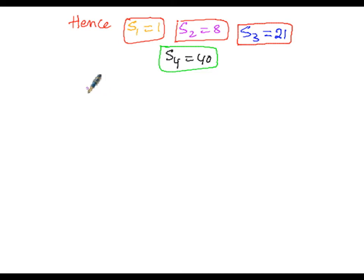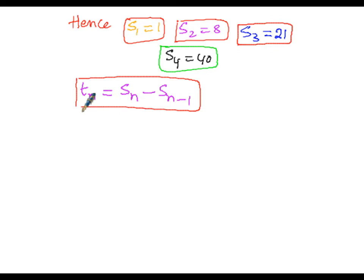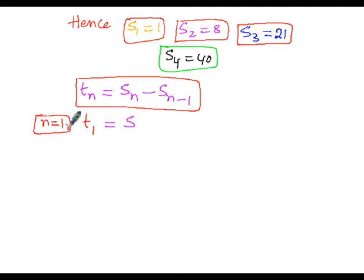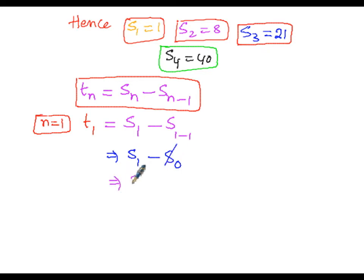Now, to get the nth term we use the formula T(n) equals S(n) minus S(n-1). In order to get the first term, n is replaced by 1. So T(1) equals S(1) minus S(0), and since S(0) is negligible, T(1) equals S(1) equals 1. So the first term is 1.